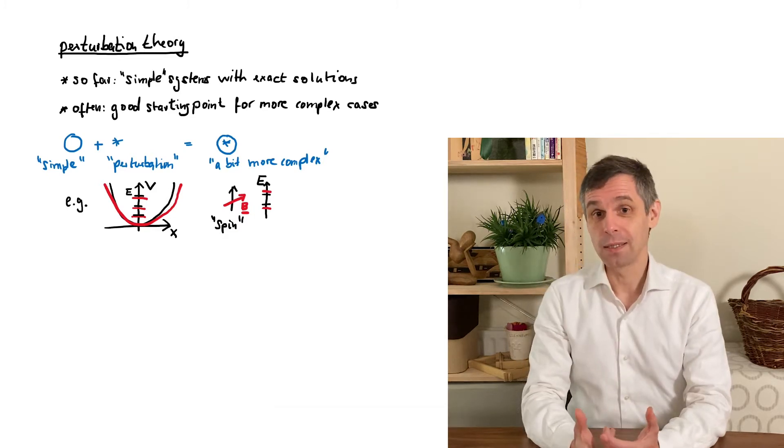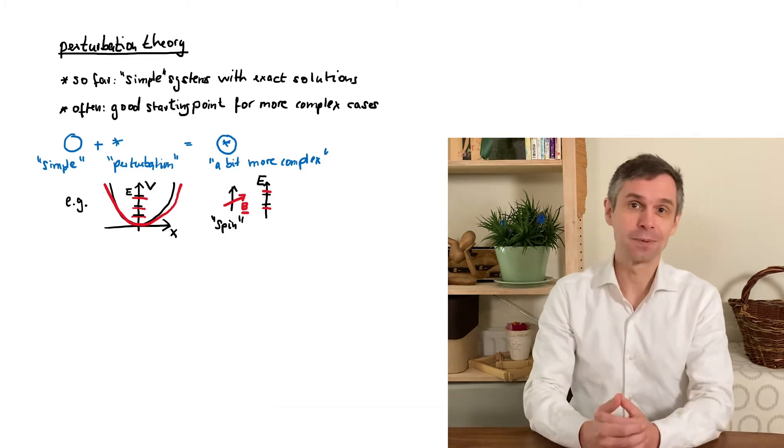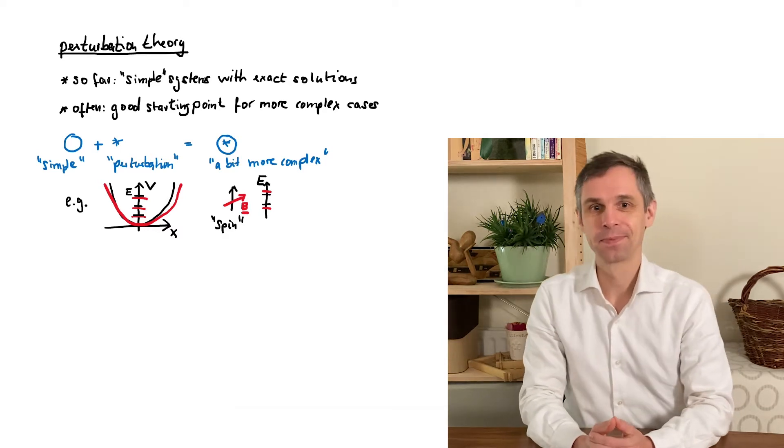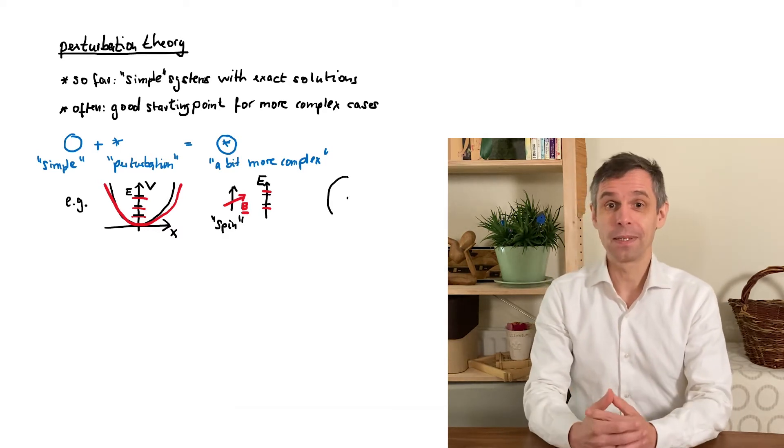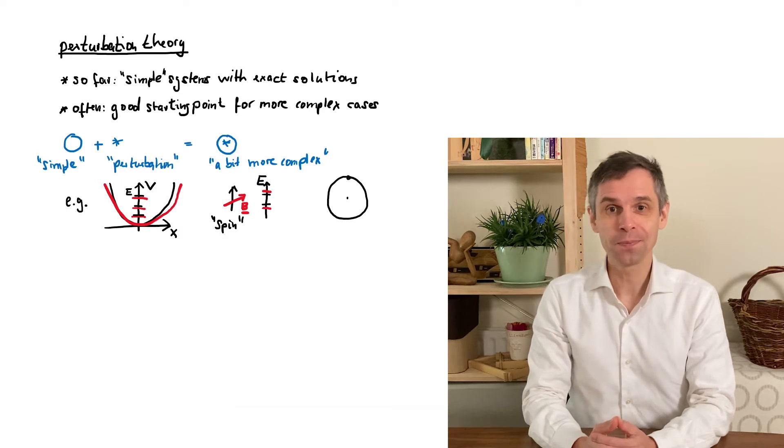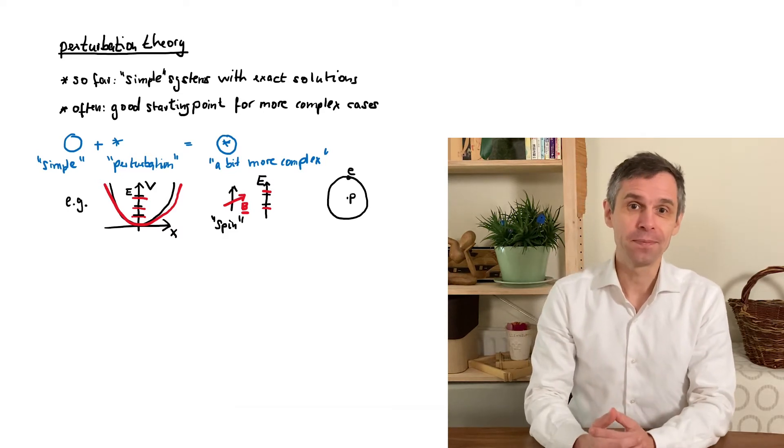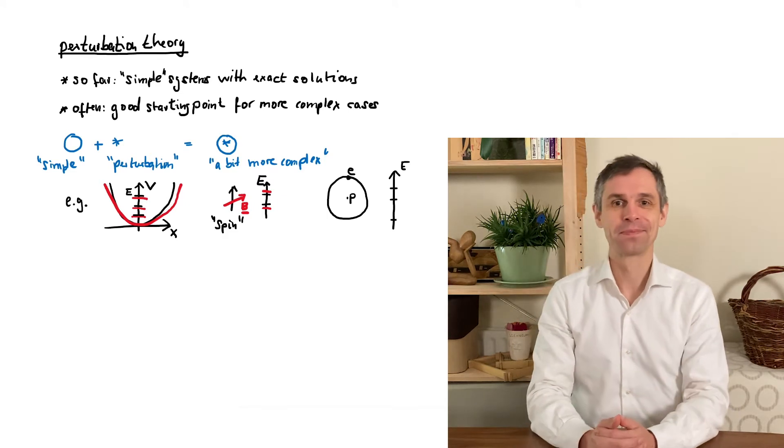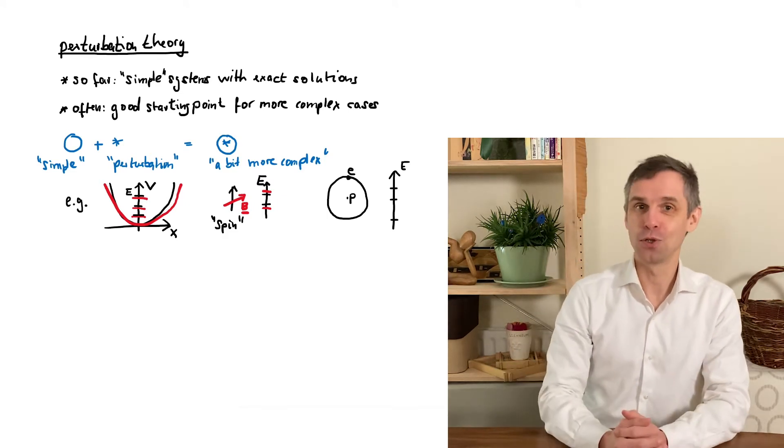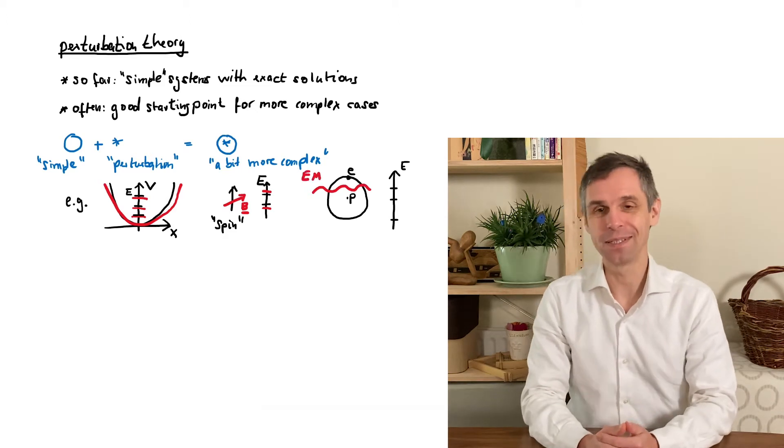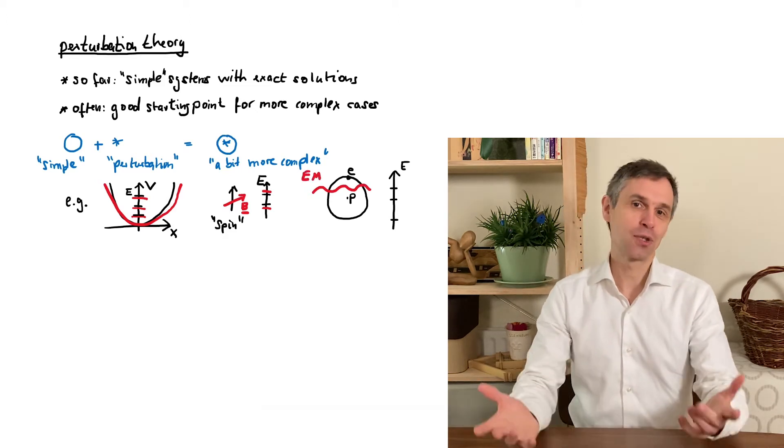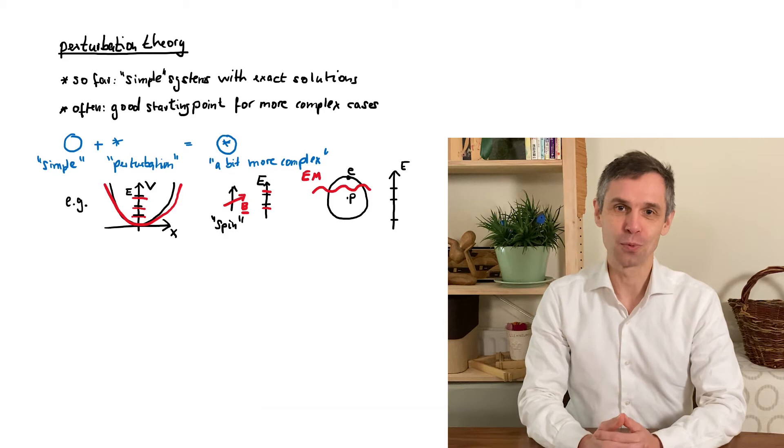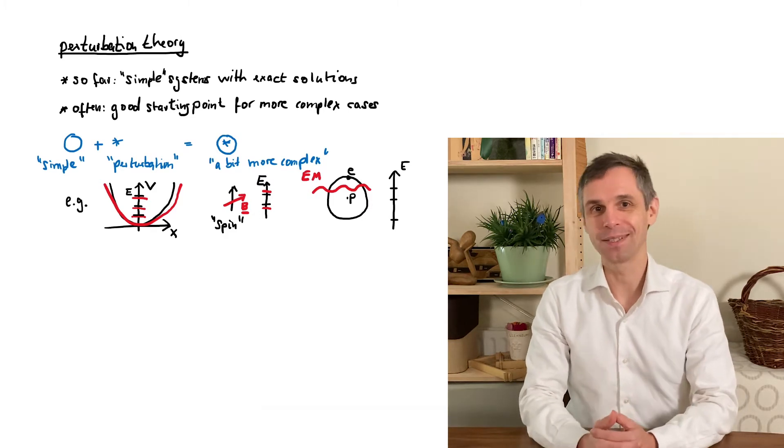We will also study the hydrogen atom, one of the really central quantum mechanical systems that we can cover in this course. This is a quantum system where an electron moves around a proton which is the nucleus of the atom. Well that's just another quantum system which has energy levels. Atoms such as this can be conveniently probed by exposing them to electromagnetic radiation. And now you can ask what happens to the energy levels when you expose an atom to weak electromagnetic radiation.